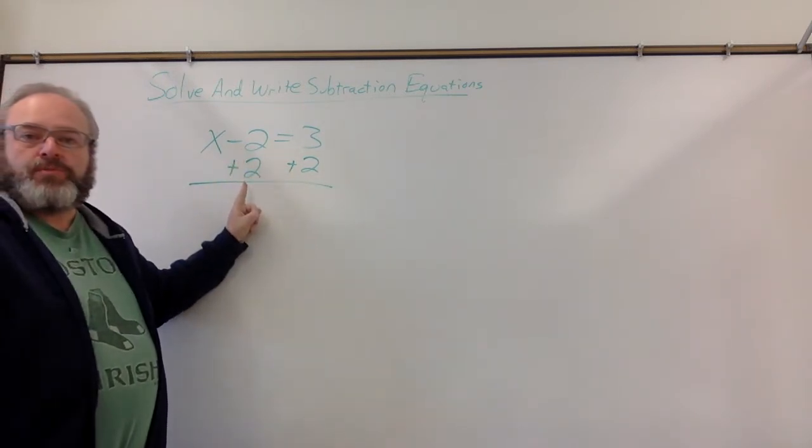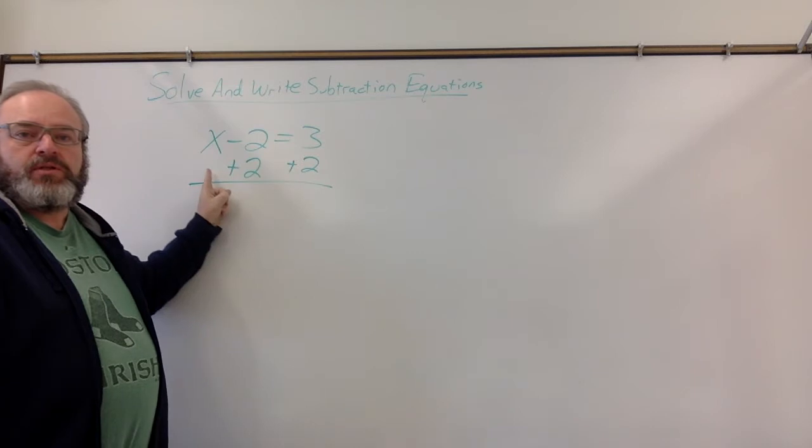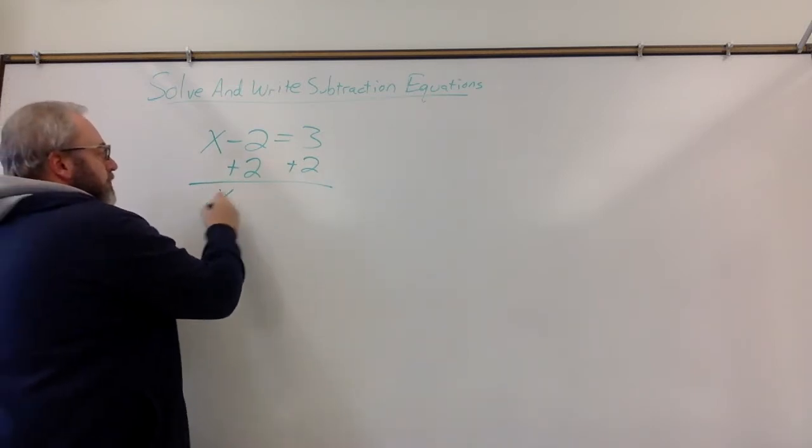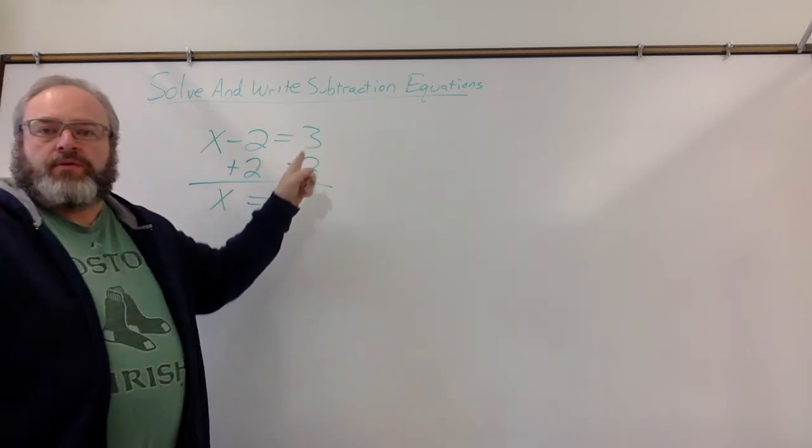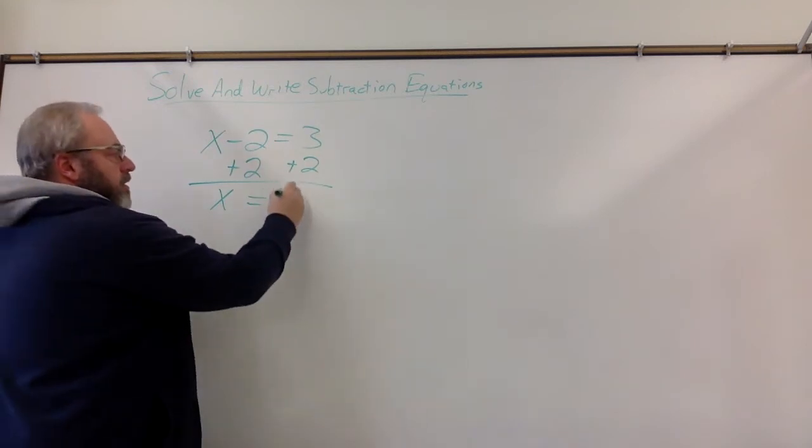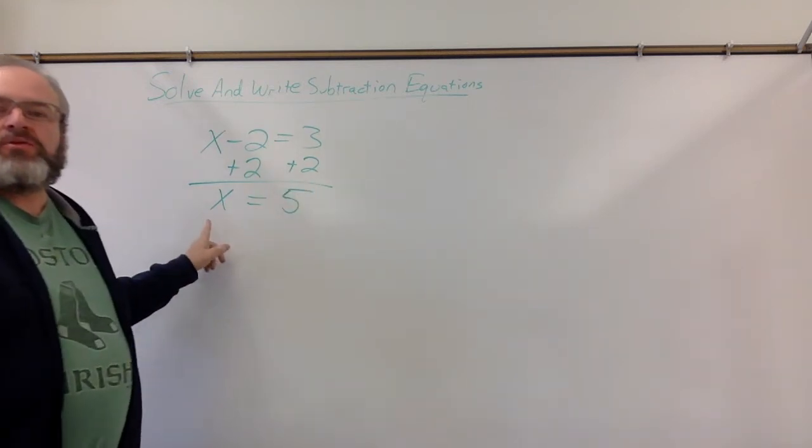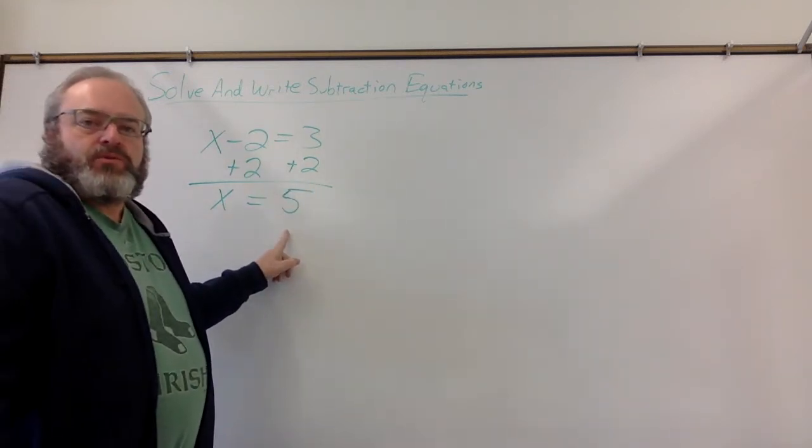Now, the minus 2 and the plus 2 are opposites of each other, so they cancel out, leaving just the x. Over here, we have 3 plus 2, which is 5. So our answer is x equals 5.